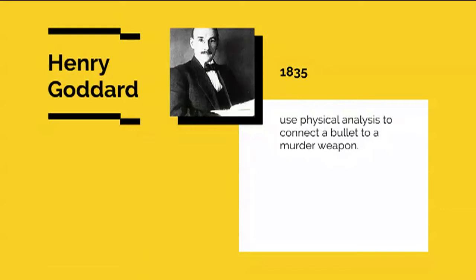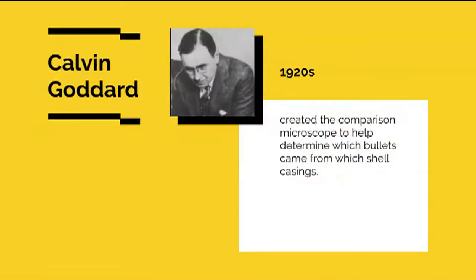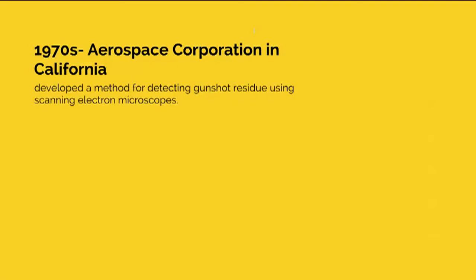In 1835, Scotland Yard's Henry Goddard became the first person to use physical analysis to connect a bullet to the murder weapon. Bullet examination became more precise in the 1920s when American physician Calvin Goddard created the comparison microscope to help determine which bullets came from which shell casings. In the 1970s, a team of scientists at the Aerospace Corporation in California developed a method for detecting gunshot residue using scanning electron microscopes.